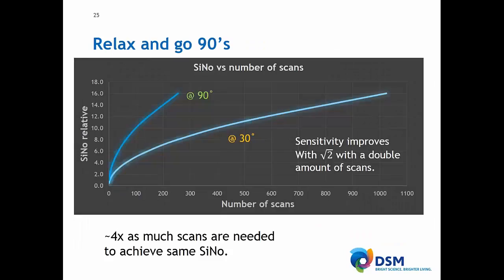If we plot the signal-to-noise versus time, you can see the number of scans increases signal-to-noise. However, for a 90 degree pulse the increase is better than for a 30 degree pulse — we need approximately four times more scans with a 30 degree pulse to achieve the same signal-to-noise as a 90 degree pulse.